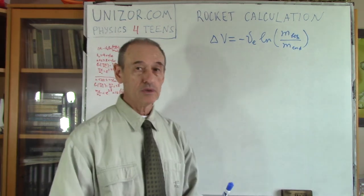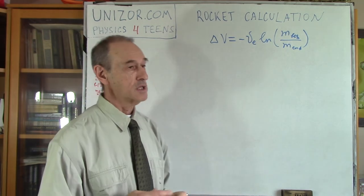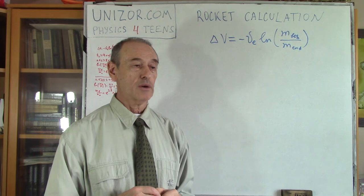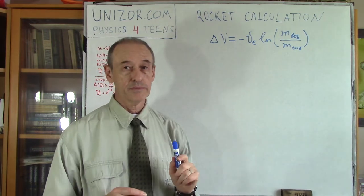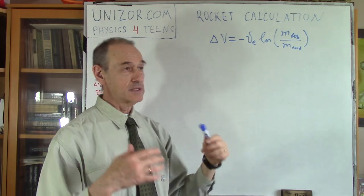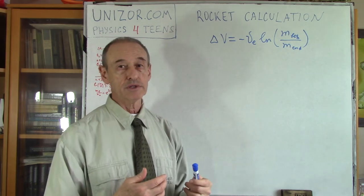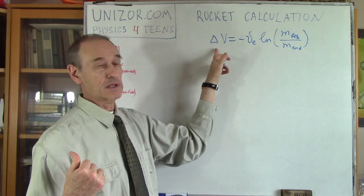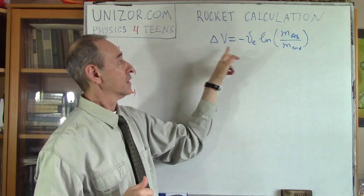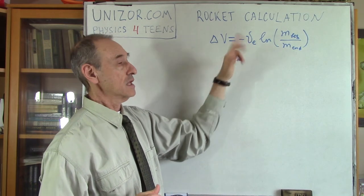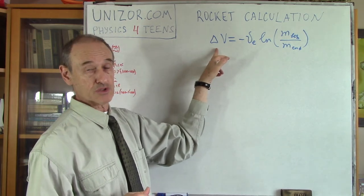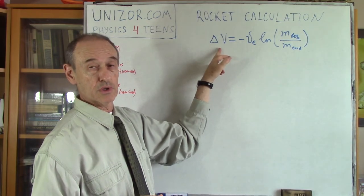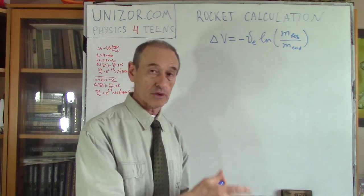So delta v is increment of the speed of the rocket. V e is effective exhaust velocity. Again, this is negative here because in its vector form, v e is directed either towards the negative direction of the x-axis, which means my delta v should be positive to accelerate, right? And to make it positive, I need this minus sign. If, however, v e is positive, which means it goes into the same direction as the rocket itself is moving, then this would be negative, and this would be negative too, which means my speed of the rocket is decreasing, it decelerates.